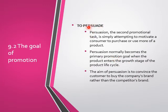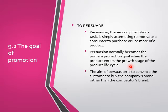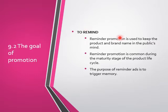The second goal is to persuade - persuasion is the second promotional task, which is simply attempting to motivate a consumer to purchase or use more of the product. Persuasion normally becomes the primary promotional goal when the product enters the growth stage of the product life cycle, because you want to convince the customer to buy your company's brand rather than a competitor's brand. As competitors start to come in, more persuasion is needed so customers will always choose your brand.